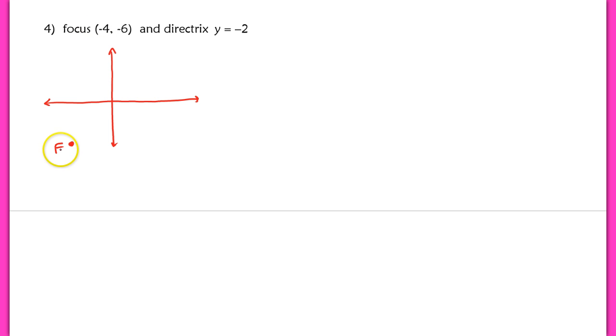Now, the directrix is given also, and it's the equation of a horizontal line. Now, that horizontal line lies below the x-axis, but it lies above the focus. So this tells us some stuff about the parabola. We know that this parabola is going to open downward, and that vertex will lie in between that line and your focus.